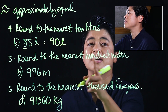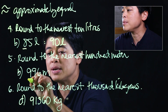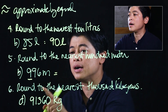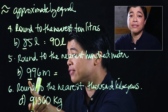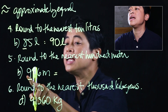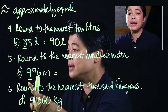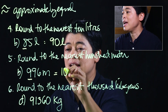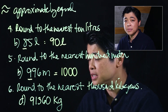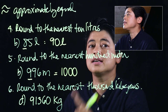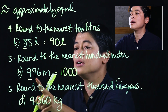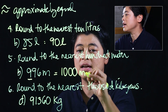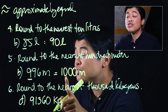The next problem says round to the nearest hundred meters, so we underline the hundreds place. If the number after the underlined value is five or more, we increase the underlined value by one. So the nine becomes a 10, and everything else thereafter becomes zero. The nearest hundred meters to 996 meters is 1000 meters.